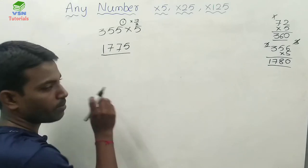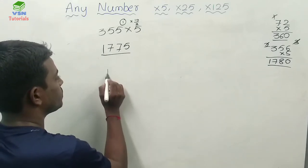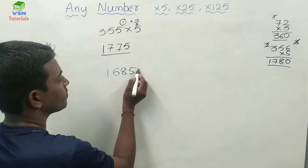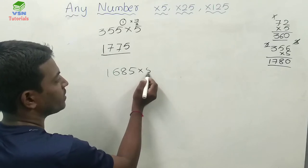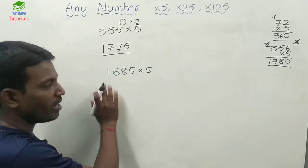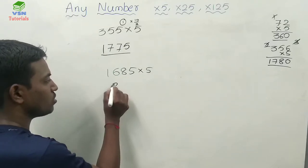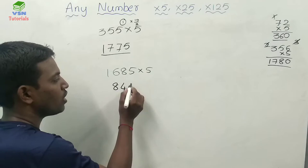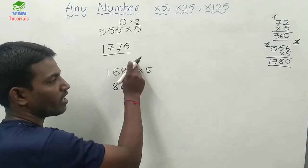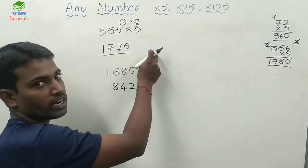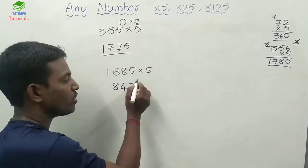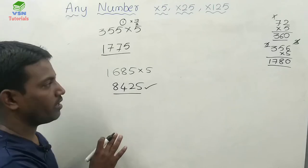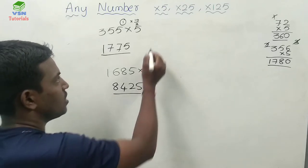Let me take another example: 1685 into 5. Make it half. 1685 divided by 2: here 2 twos are 4, and 1 remains; 1 into 10 is 10, 10 by 2 is 5. So the answer is 8425. Like this way, you can get the result.